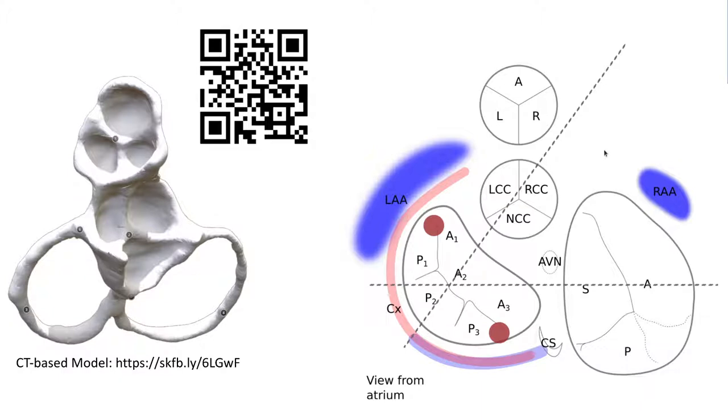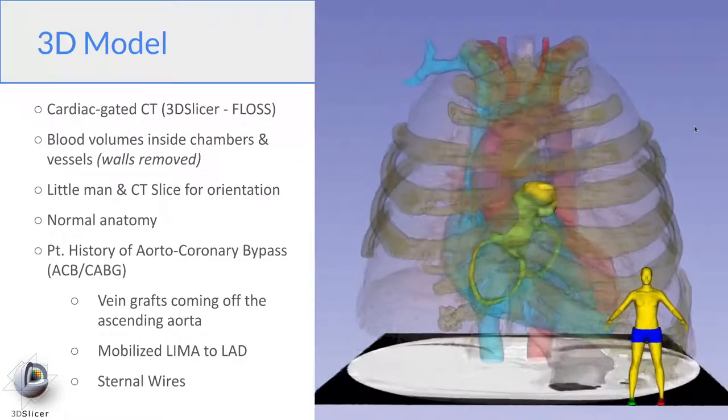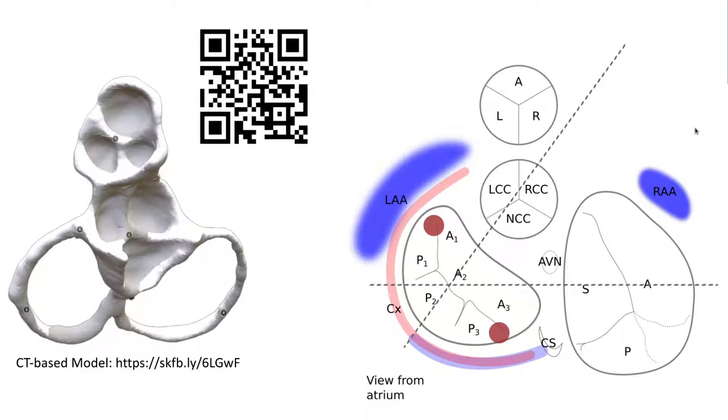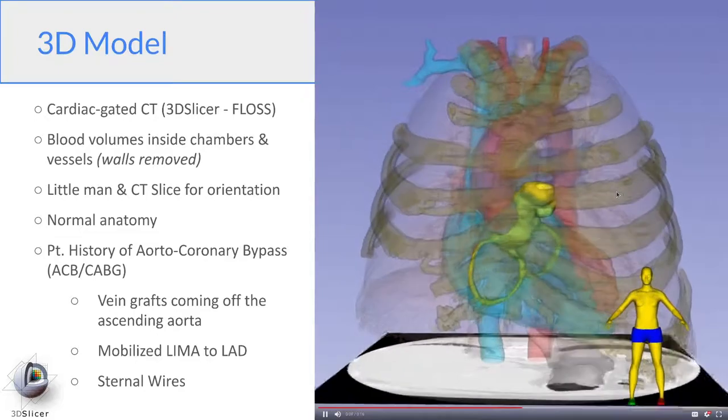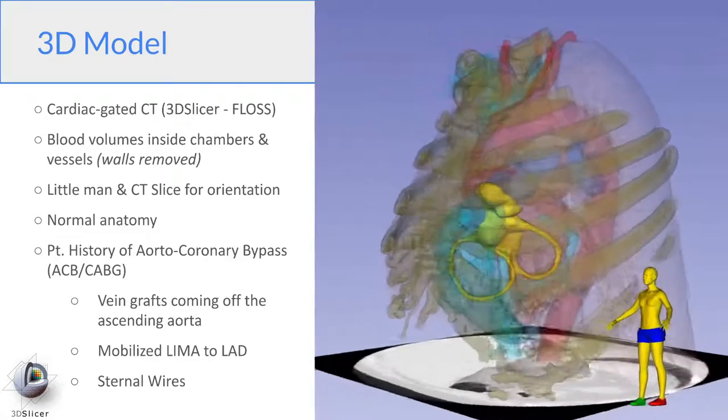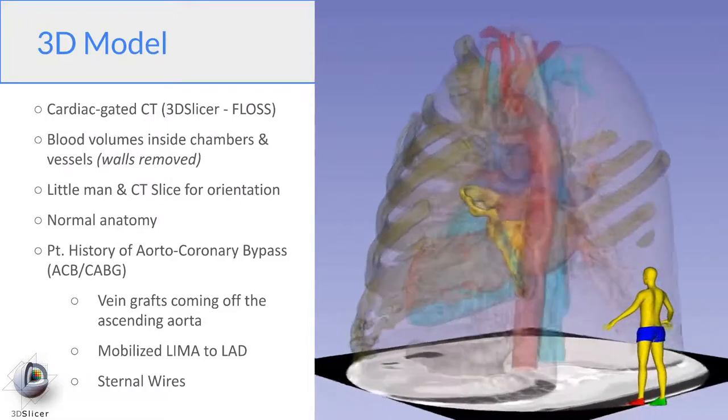So on the left, you can see the 3D structure of the heart base. This model is available as an interactive 3D model at the link that's there. So now we're going to leave the flat sheet and move into 3D. All the models you're going to see are created from a cardiac gated CT using an open source software called 3D Slicer that you can download and play with yourself.